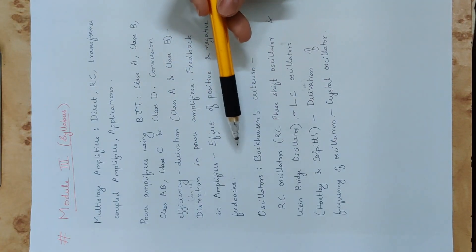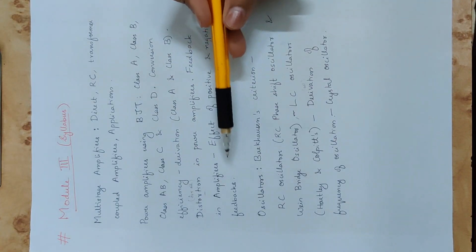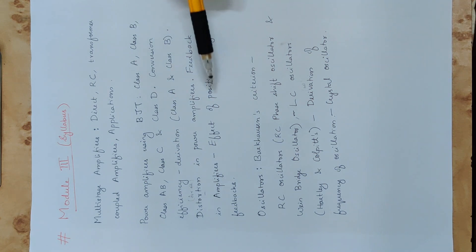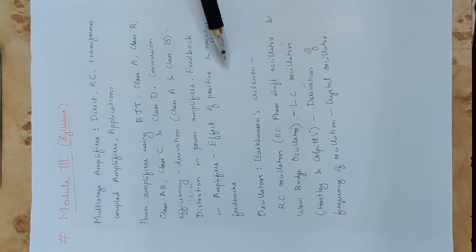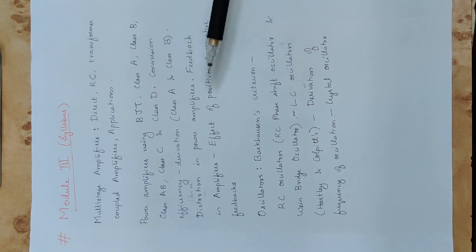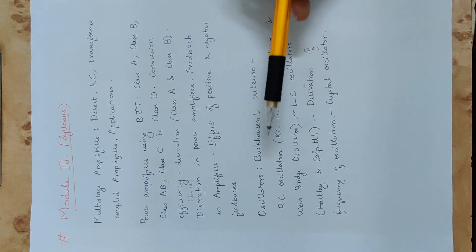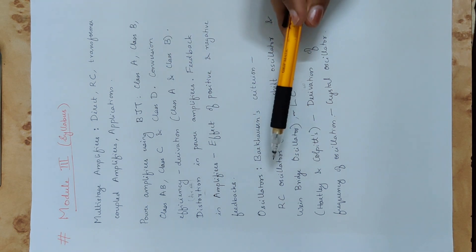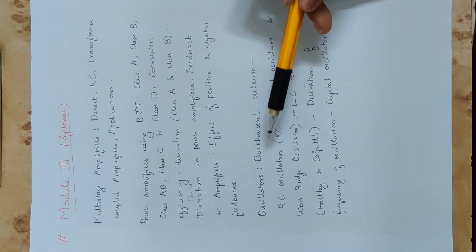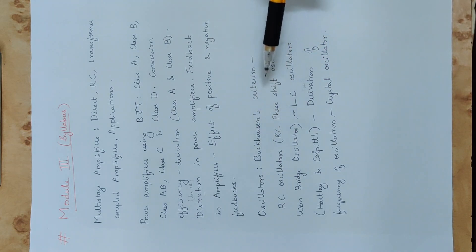We will also cover feedback in amplifiers — both positive and negative feedback — and study the effects of feedback. Next topic is oscillators. We will study the particular criteria for oscillation, which is the Barkhausen criteria.